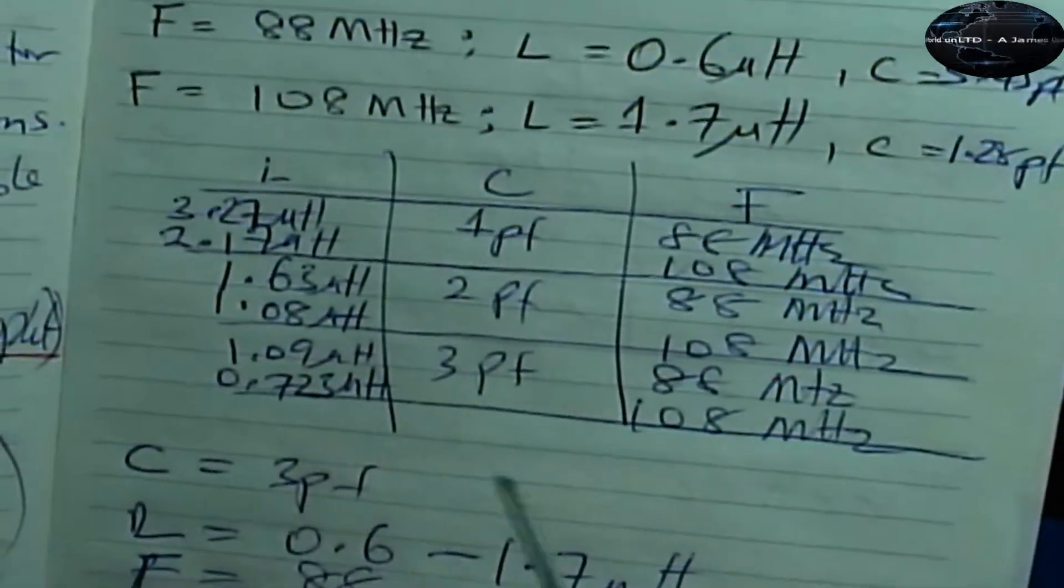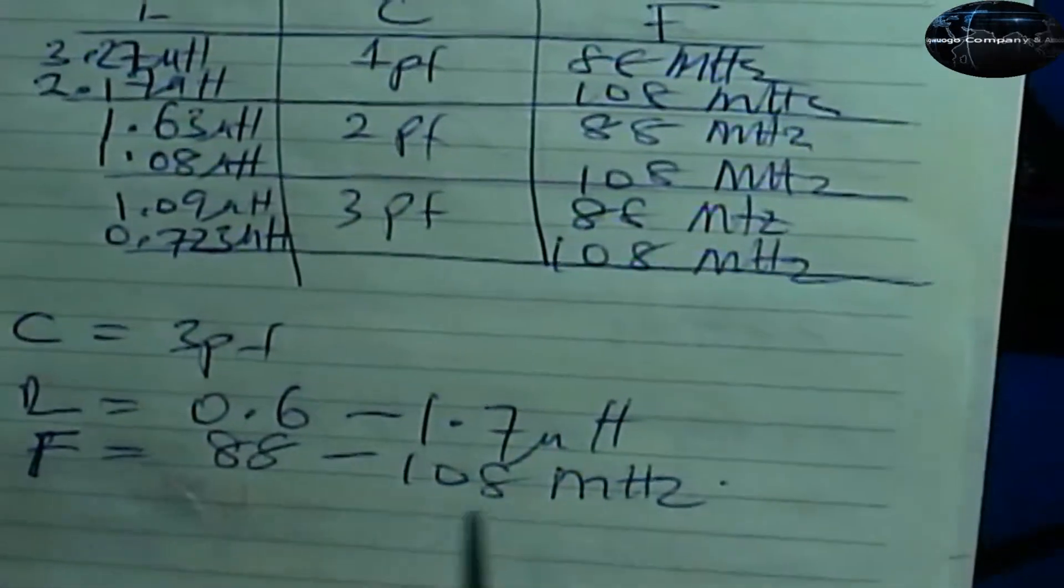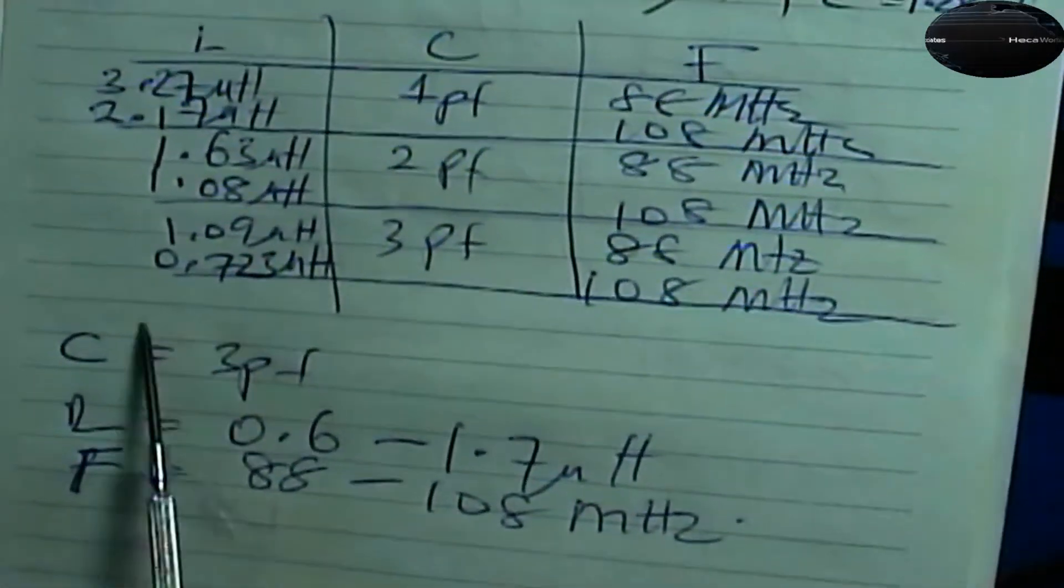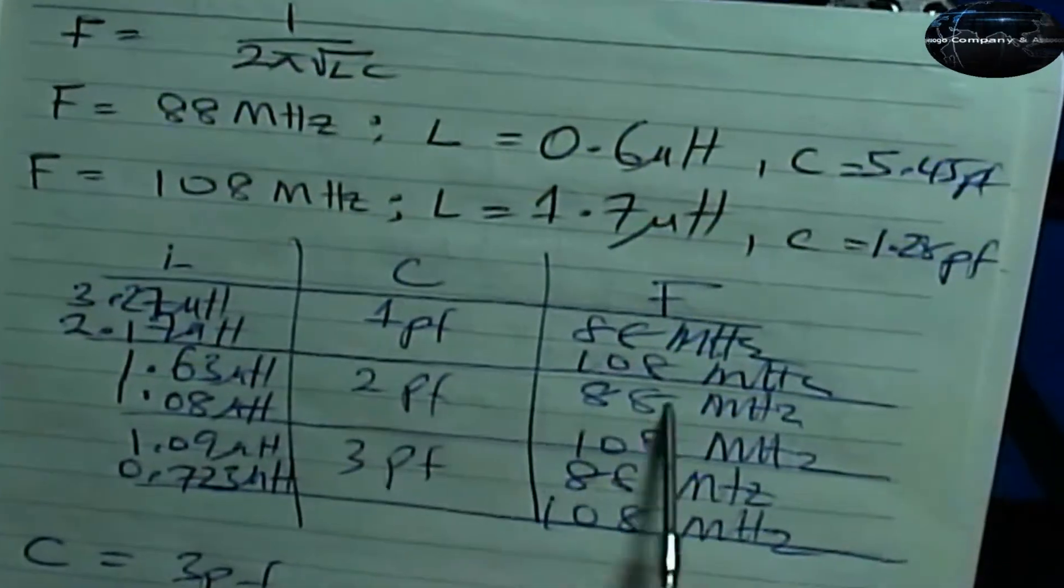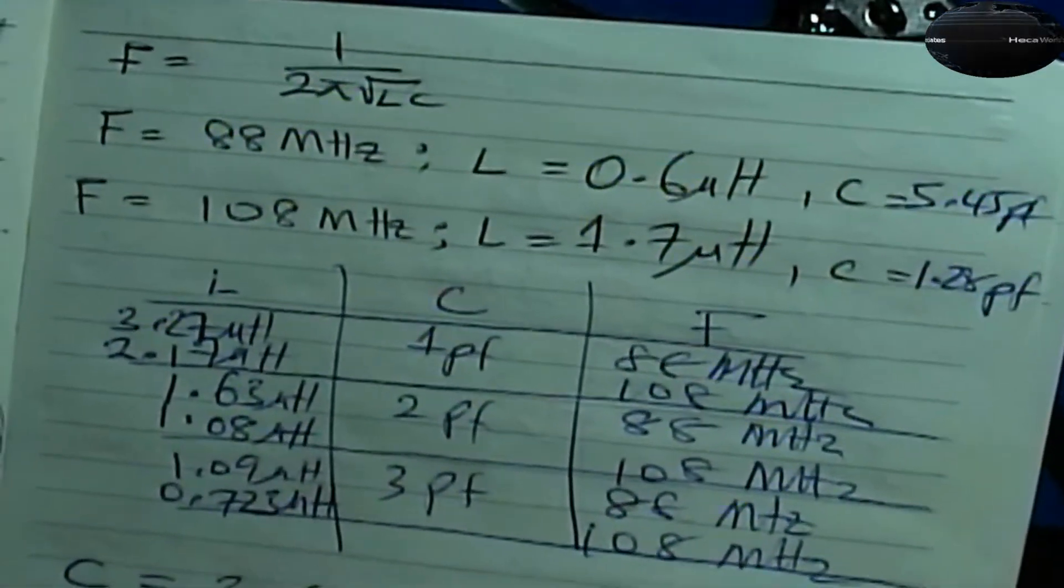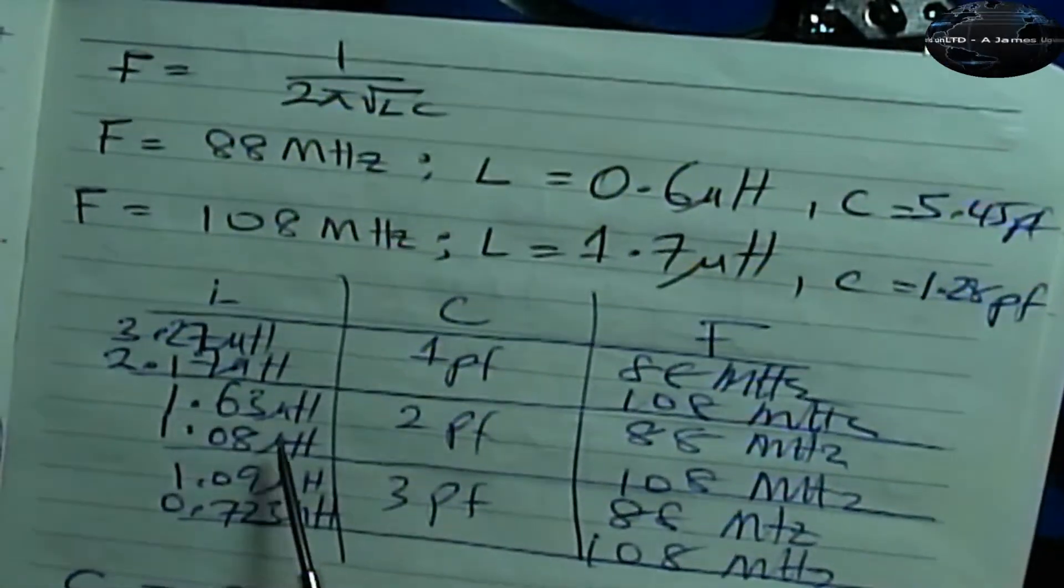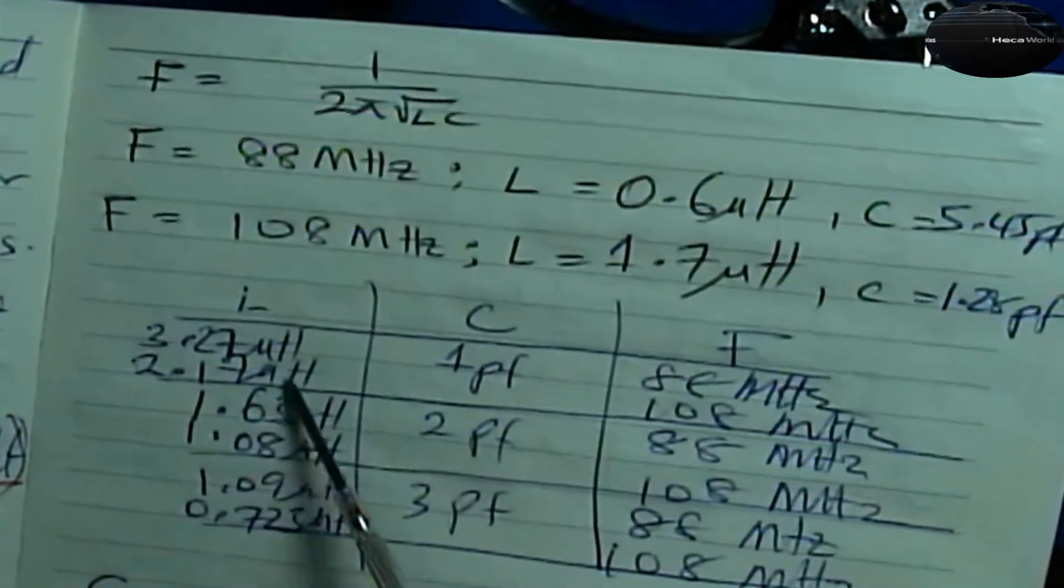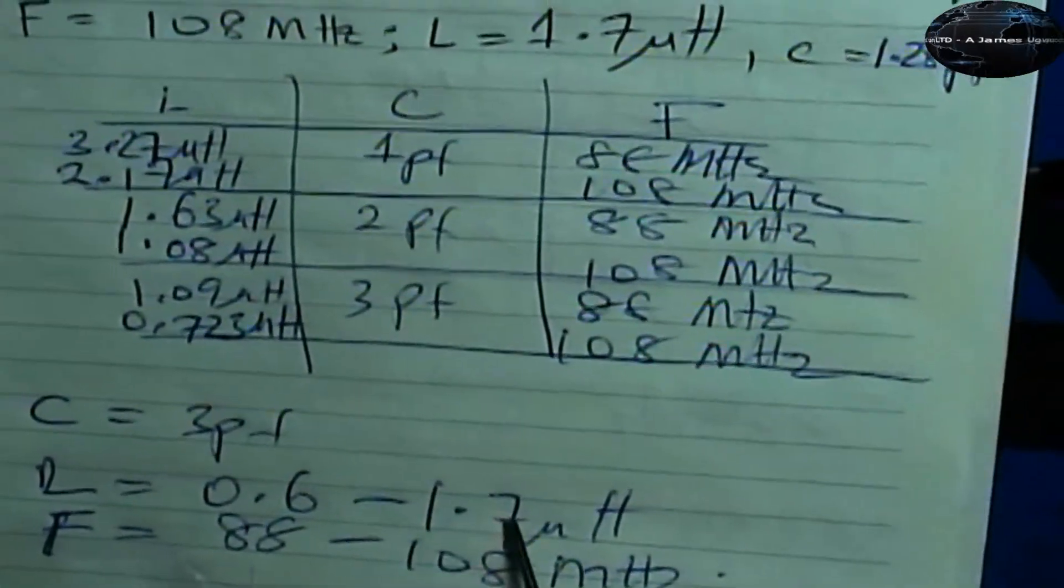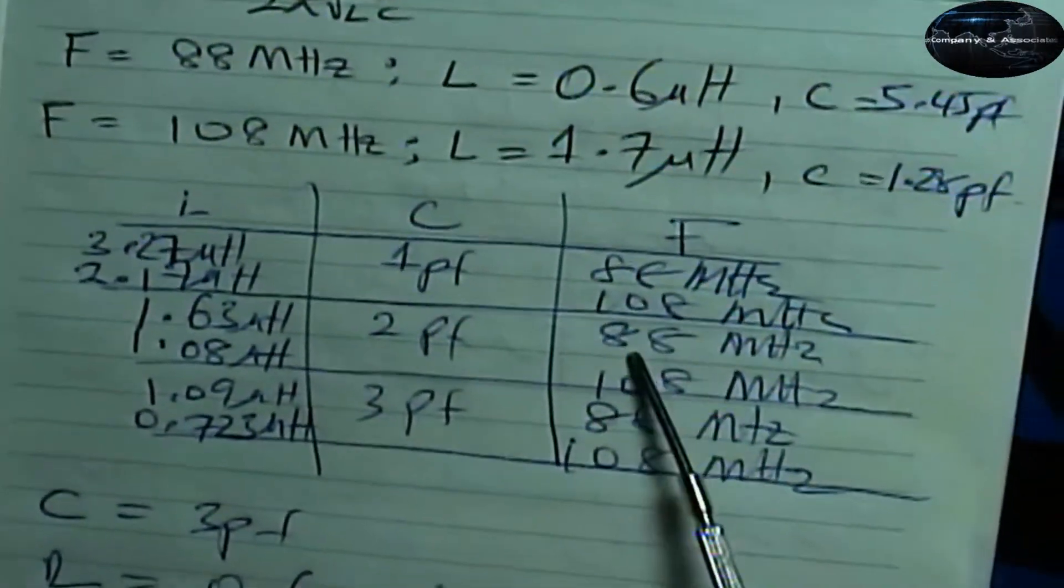The range is from 0.6 to 1.7, so it covers this range comfortably. We chose a value of capacitor. We tried to see the range is 1.08 to 1.63. Actually we can get this from our inductor because our inductor is up to 1.7, so we can actually use two picofarad capacitor to cover the same range.